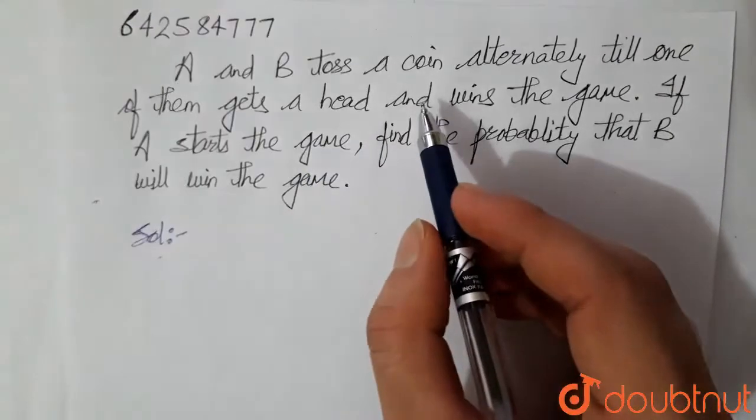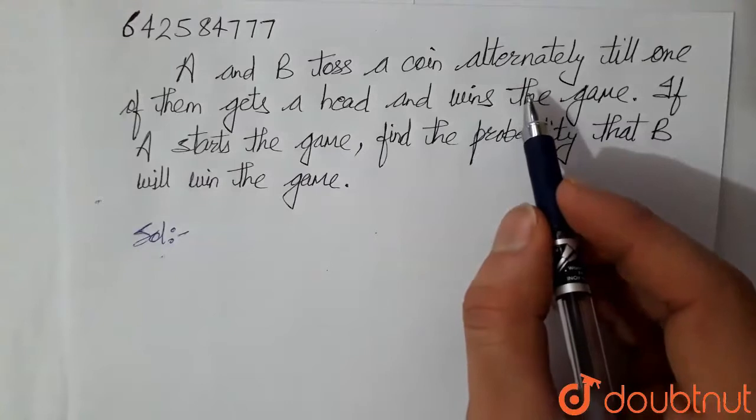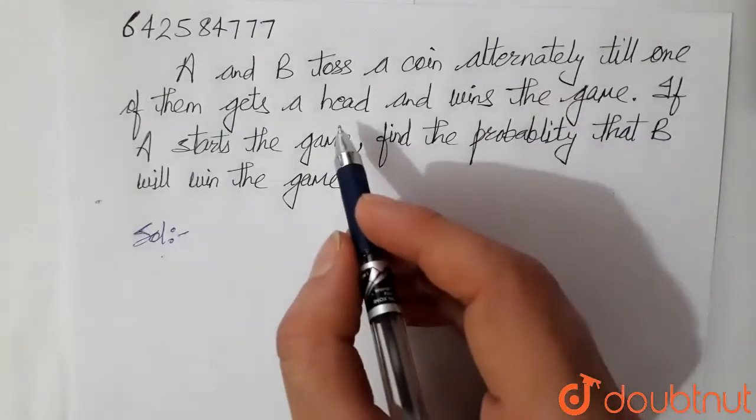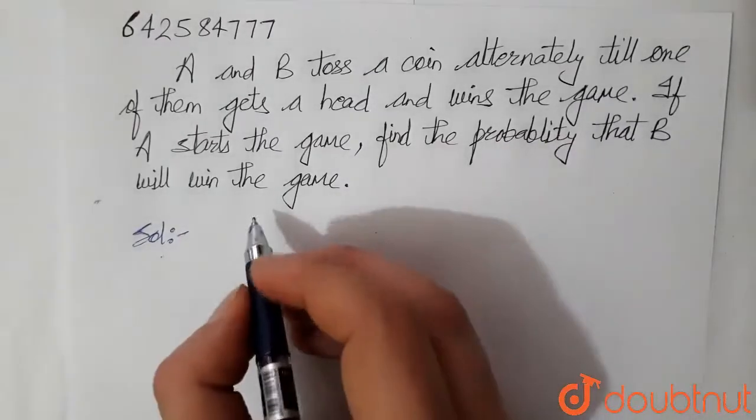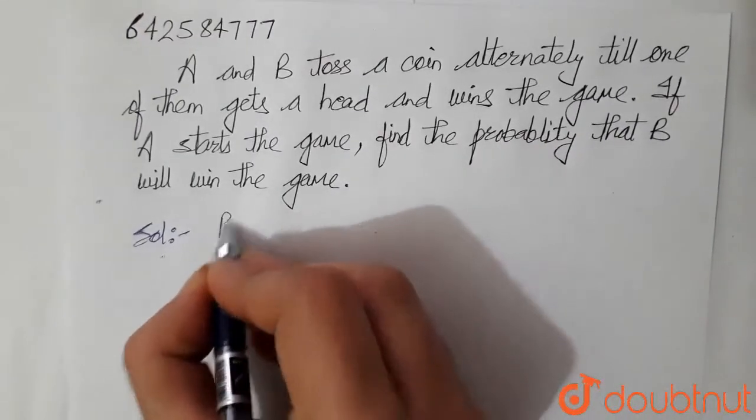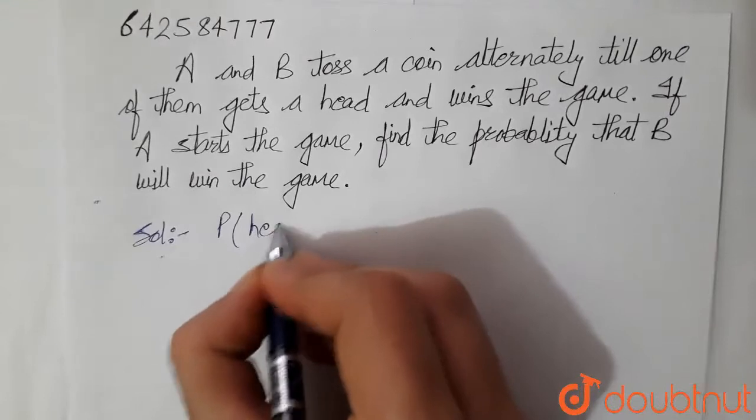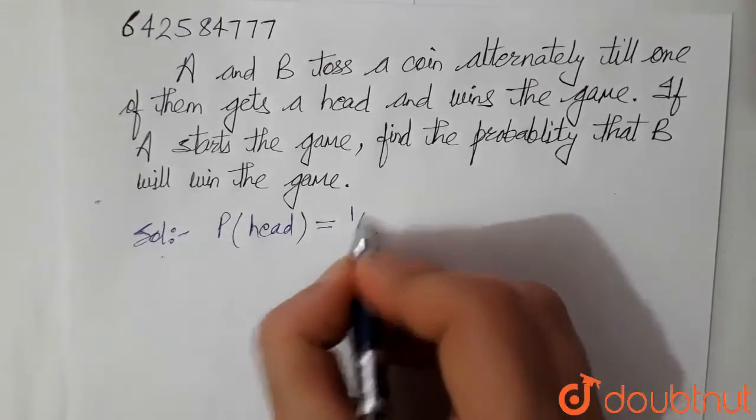Here, A and B both are tossing the coin alternately. Okay, so whoever gets the head first wins the game. Okay, this is the game. Now, probability of getting a head is 1 by 2 for both of them.